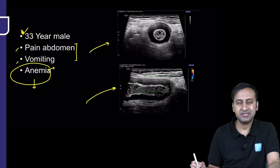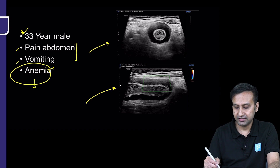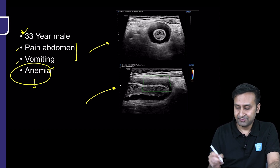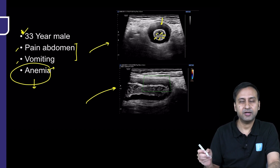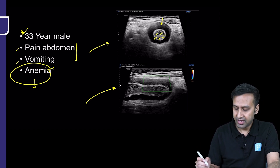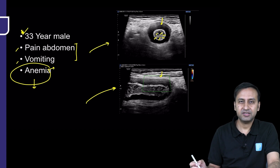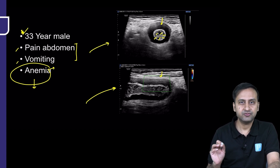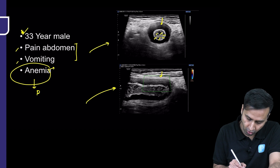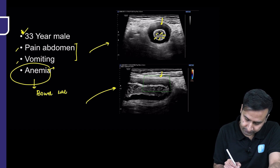On high-frequency ultrasound, there is classical bowel wall thickening — the bowel appears significantly thickened. To a great extent, the inner layer appears relatively spared, and predominantly it is the outer and middle layers that are thickened. On color Doppler, there is no significant vascularity in the bowel wall, but we are clearly dealing with abnormal bowel wall thickening.